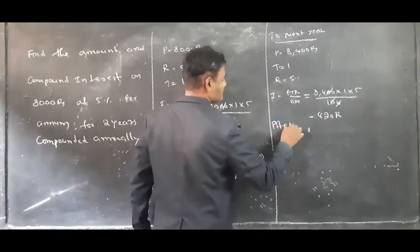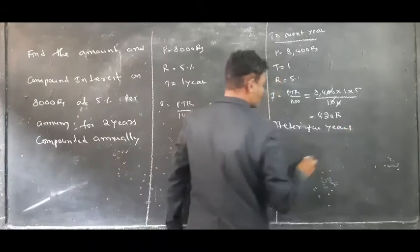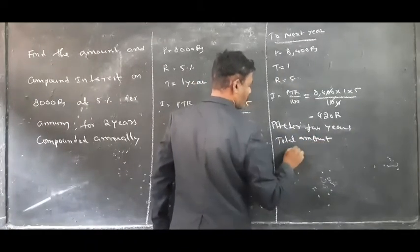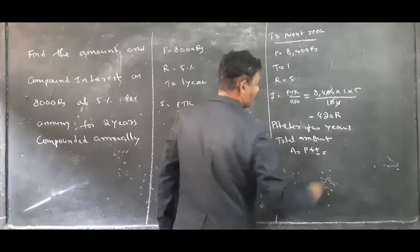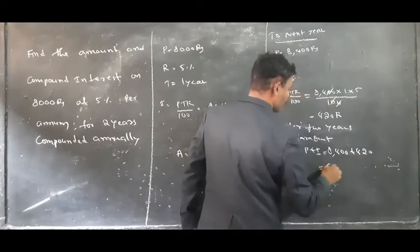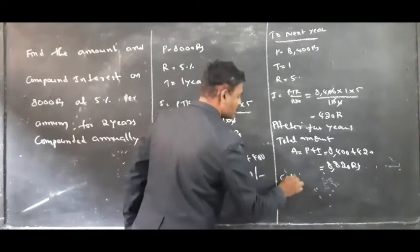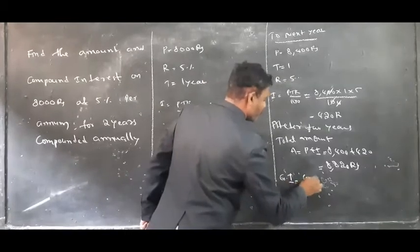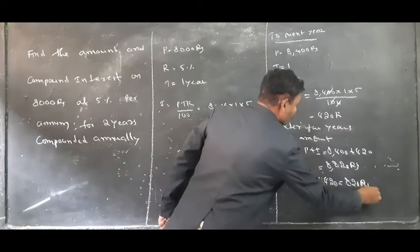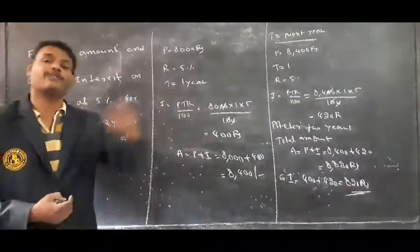After 2 years, total amount A is equal to P plus I: 8400 plus 420 equals 8820 rupees. The compound interest is: first year 400 plus second year 420, so total compound interest is 820 rupees. He has to pay 820 rupees as interest on 8000 rupees after 2 years.